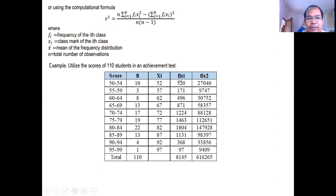This one is frequency times class mark. So 10 times 52 is 520. 3 times 57, 171. 8 times 62, 496. Then just continue the process. Frequency times class mark. Then i-add ito lahat. The answer is 8145.